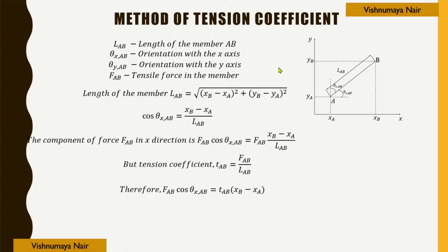Now we will see how we can apply this method of tension coefficient for finding out the forces in the members. Consider a member AB oriented at an angle theta-x-ab with the x axis and theta-y-ab with the y axis. Let lab be the length of member AB and fab be the tensile force in it. The length lab can be found as lab = √((xb−xa)² + (yb−ya)²), and cos(θx,ab) = (xb−xa)/lab.